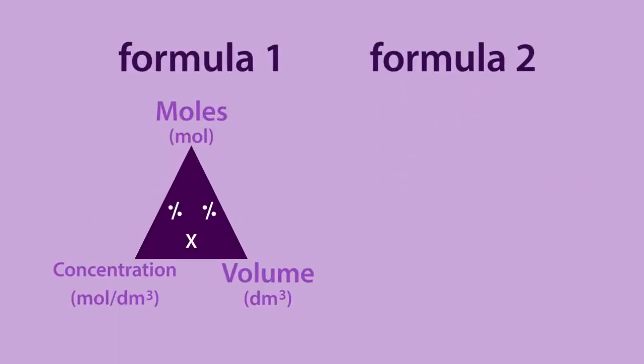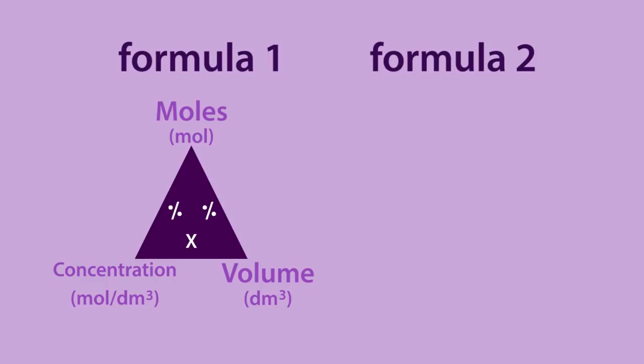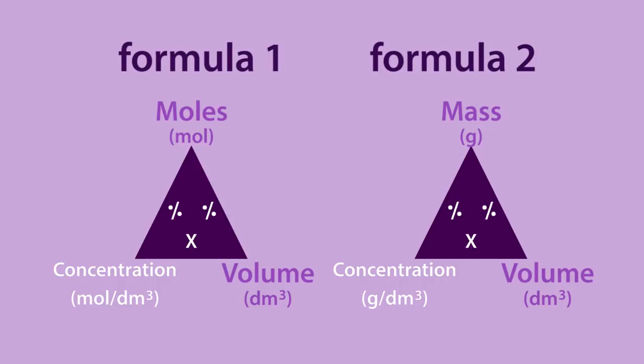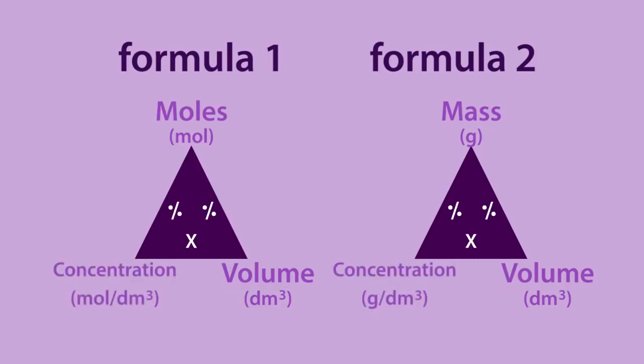In summary, there are two ways of calculating concentration. One involves moles, the amount of solute, the other the mass of the solute. When calculating the concentration, both ways will involve dividing it by the volume. The formula triangle can be used to calculate any quantity by covering up the one you need to find and using a multiplication or division as shown in the triangle.